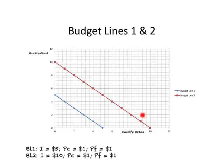Comparing BL2 to BL1, Budget Line 2 indicates more consumption choices. More consumption choices means higher real income. So BL2 implies higher real income relative to BL1. This has happened because the price of both goods stayed the same while John's nominal income doubled.